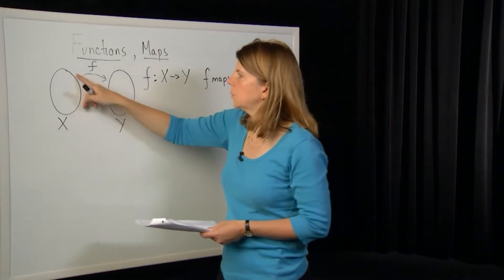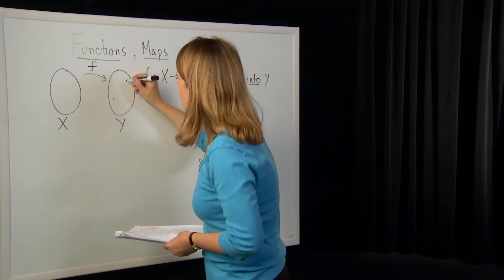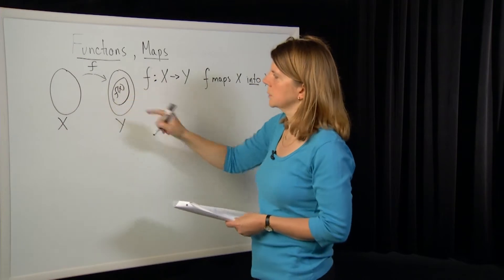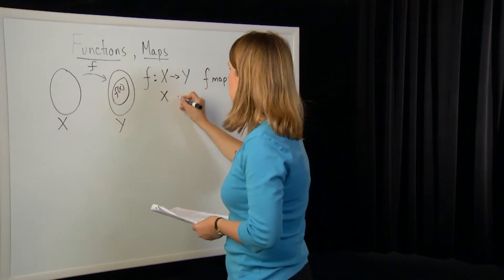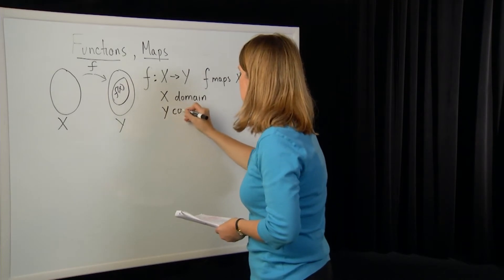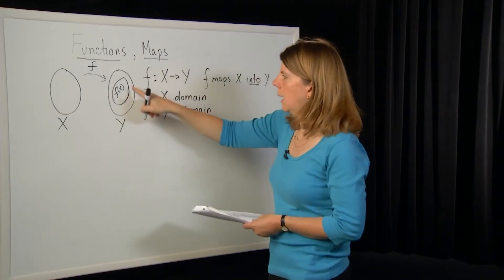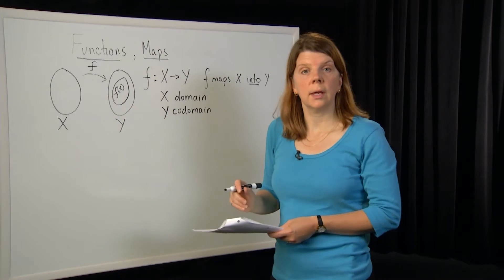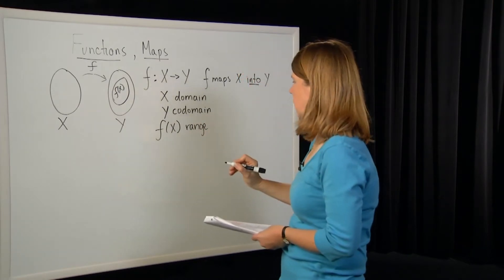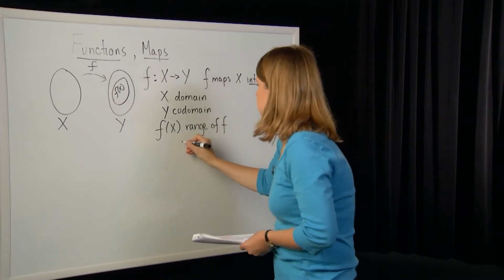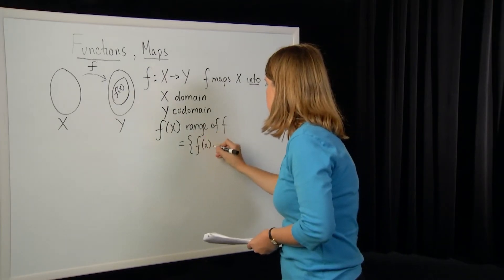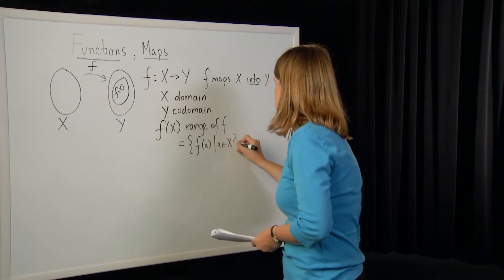What does 'into' mean? It means that if we take all of the elements of X and map through F, we get, in general, some subset of Y. I'm going to write that as F of capital X. Some terminology: X is called the domain of F, Y is called the codomain of F, and the set F of capital X is called the range of F. We can define the range mathematically as all points F of little x, such that little x belongs to the domain capital X.